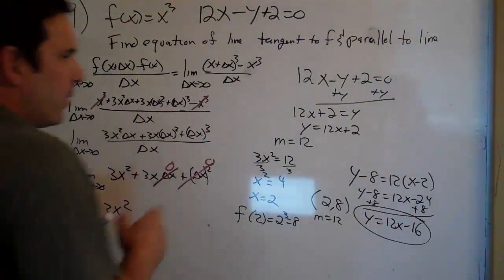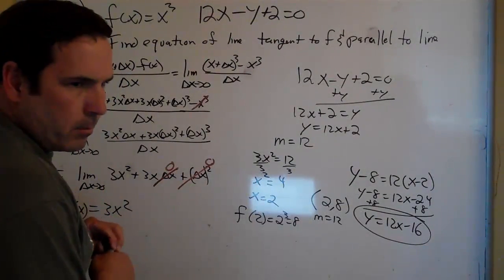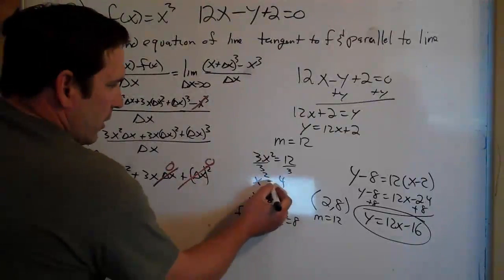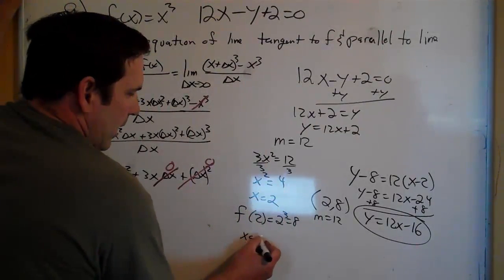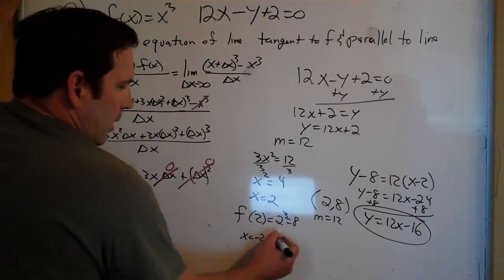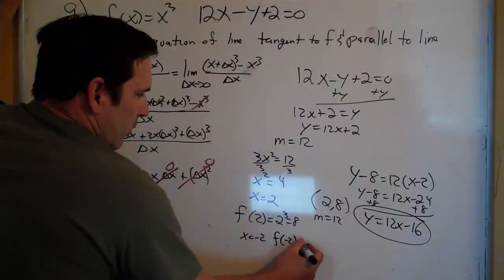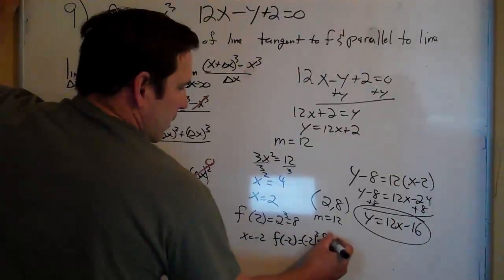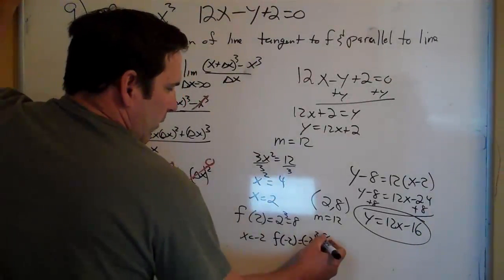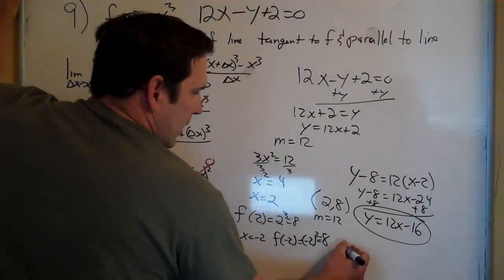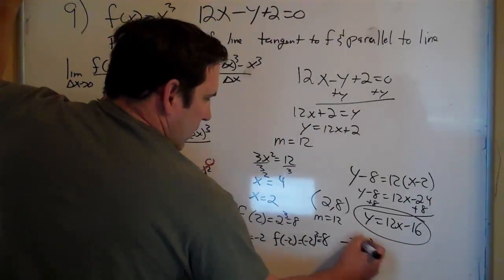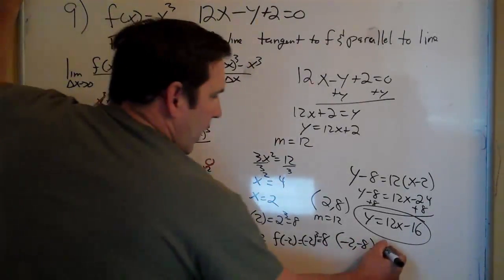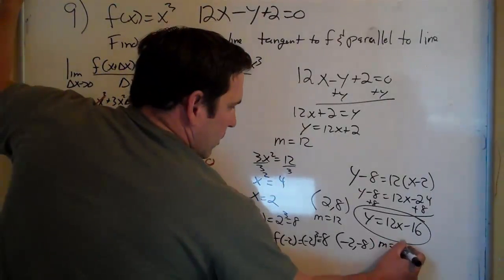Okay, there were two answers to this one. The other one I should have looked at was whenever x is negative 2, f of negative 2 would be negative 2 cubed, which is negative 8. So now we're going to use negative 8. We'll use the point negative 2 and negative 8. We're running out of space here, though. And m equals 12.